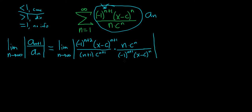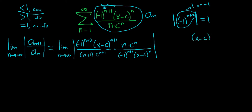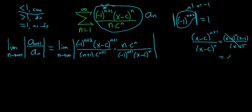First, notice that all of the negative 1's will go away, because when you take the absolute value of negative 1 to any power, you always get 1. Now let's deal with the x minus c's. We have x minus c to the n plus 1 over x minus c to the n. You can write this as x minus c to the n times x minus c, all over x minus c to the n — and those cancel, leaving just x minus c.